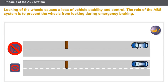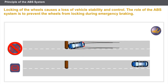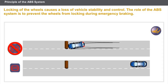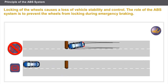During emergency braking, high pressure is applied to the brake pedal and the wheels lock. Locking of the wheels causes a loss of vehicle stability and control. If the slip value is at 100%, the wheels lock and the vehicle loses grip. The role of the ABS system is to prevent the wheels from locking during emergency braking. A slip value not exceeding 20% enables the control of the vehicle to be retained.